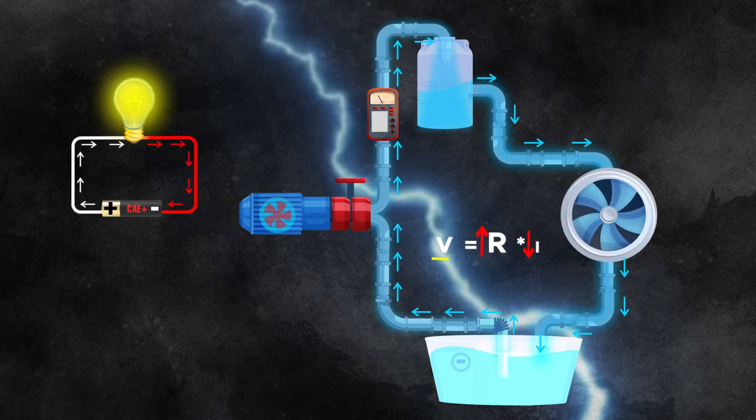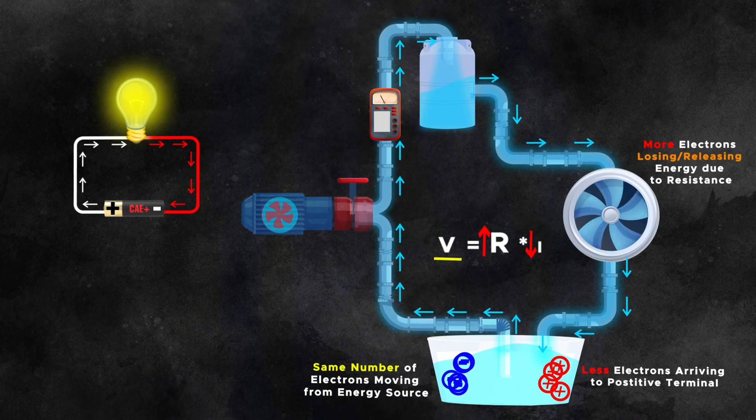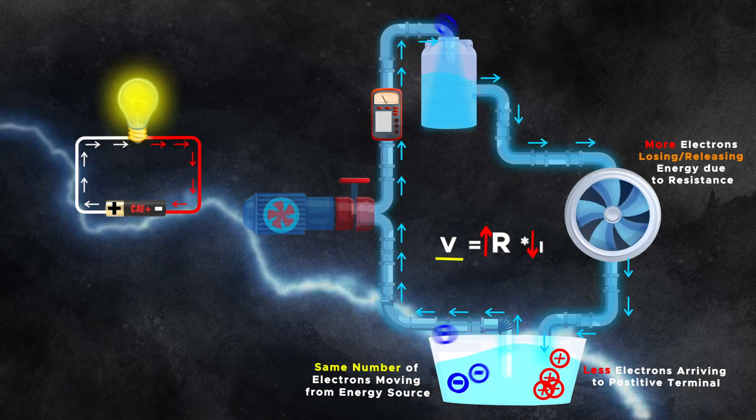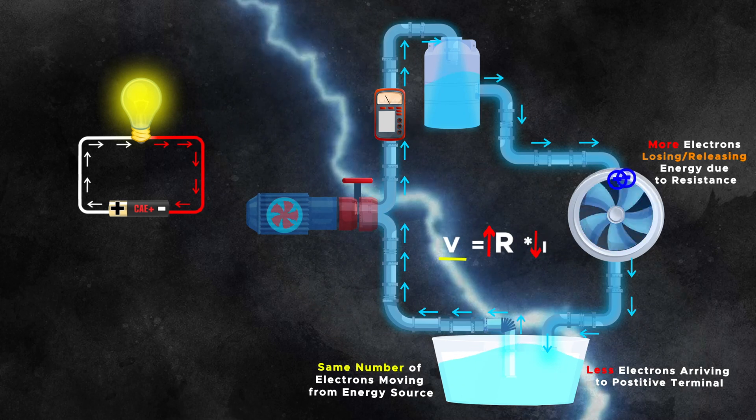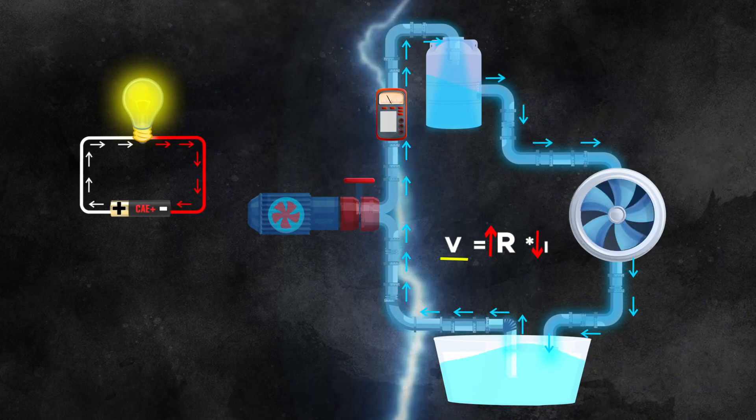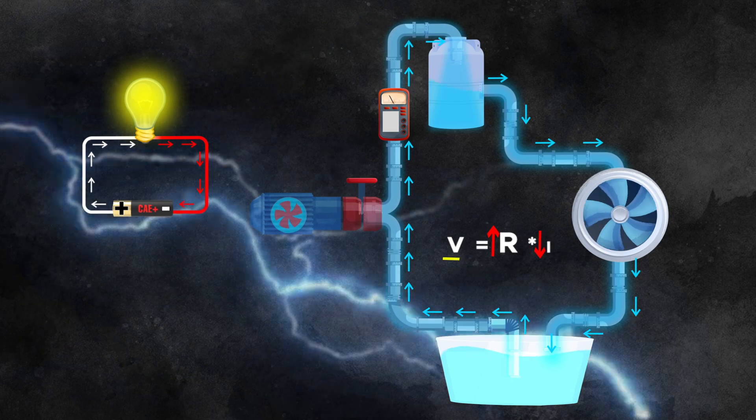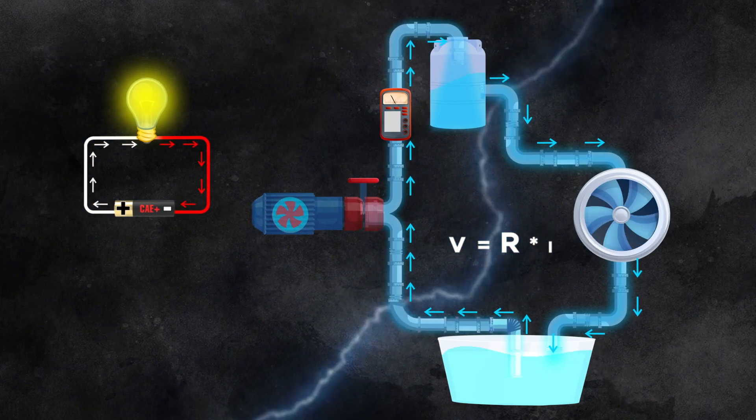Conversely, let's assume that the resistance increases, which can be demonstrated by a larger turbine, but the voltage source or pump remains unchanged. Consequently, the flow of electrons to the lower pool encounters more obstacles, leading to a reduction in the current. This observation also corresponds with the VRI formula.